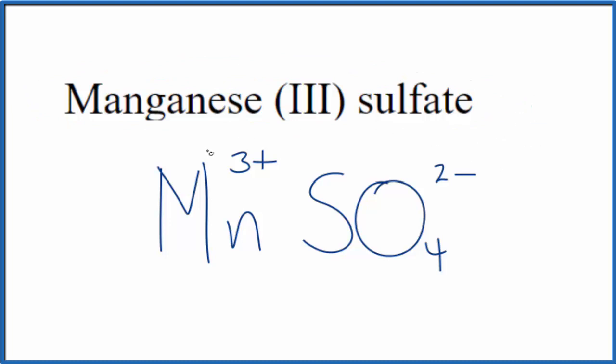We can use a bit of a trick to make that happen, it's called the crisscross method. We'll move the 2 down here and the 3 out here, let's get rid of these charges.